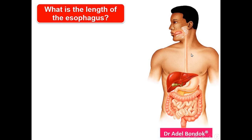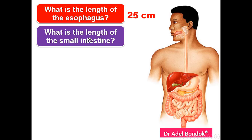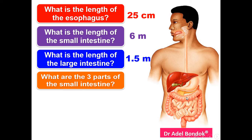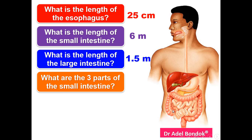What is the length of the esophagus? The length of the esophagus is 25 centimeters, about 10 inches. What is the length of the small intestine? The length of the small intestine is 6 meters. What is the length of the large intestine? One and a half meters. What are the three parts of the small intestine? The duodenum, then jejunum, and ileum.